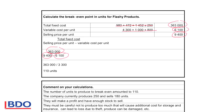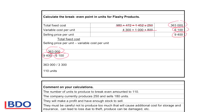That means that in this business, they have to produce at least 110 units to break even. If they only make 110 units, they will not make a profit and they will not make a loss. As soon as they start making more than 110 units, they will start making a profit.